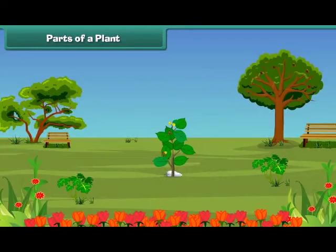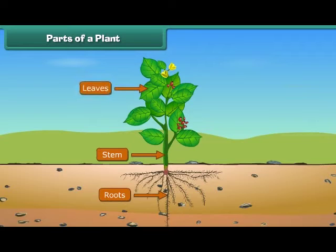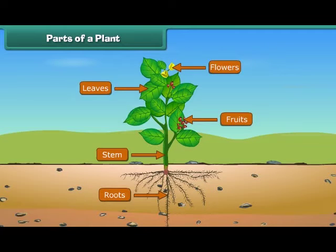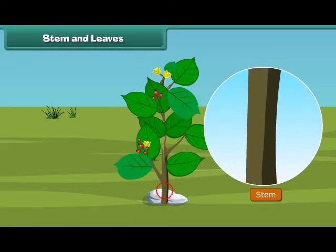Friends, let us discuss the various parts of a plant. The main parts of a plant are roots, stem, leaves, flowers, and fruits. Roots are the lower part of a plant. They grow in soil and help the plant get water and minerals from the soil. The next part is the stem — the hard part of the plant which grows above the ground. It bears leaves, fruits, and flowers, and also supports the plant.